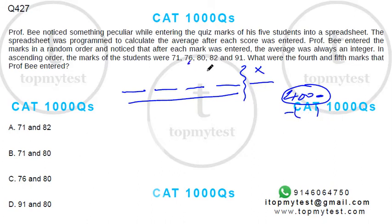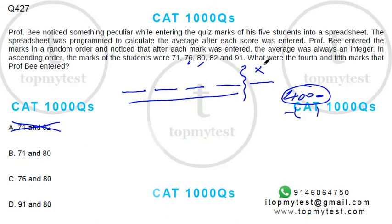So the last mark can be either 76 or 80. From the given options, only 80 is available. So the last mark is 80, which means the sum of the first four marks is 320.